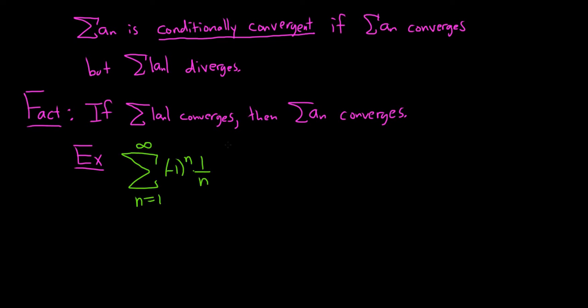So first of all, notice it is an alternating series. So we can use the alternating series test. So if you set a sub n equal to 1 over n, you can go through the motions of the alternating series test.